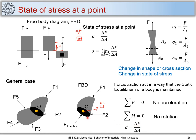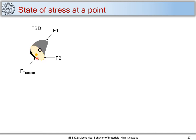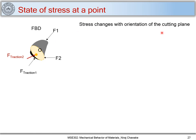Consider a first scenario with a black plane passing through point O cutting the body in two. If instead I take a yellow plane through the same point O but at a different angle, a different traction force is required to maintain equilibrium at O. This shows that the state of stress at a point depends on the orientation of the cutting plane — the stress changes with the plane's orientation.